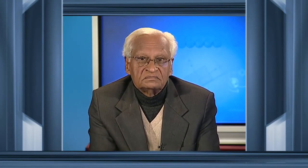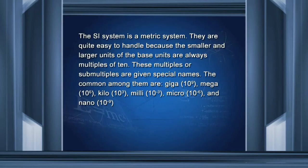Another advantage of the SI system is that it is a metric system. The smaller and larger units of the base units are always multiples of ten. These multiples are given special names. The common ones are: Giga, which stands for 10 to the power 9; Mega, which stands for 10 to the power 6; Kilo, which stands for 10 to the power 3; Milli, which stands for 10 to the power minus 3; Micro, which stands for 10 to the power minus 6; and Nano, which stands for 10 to the power minus 9.